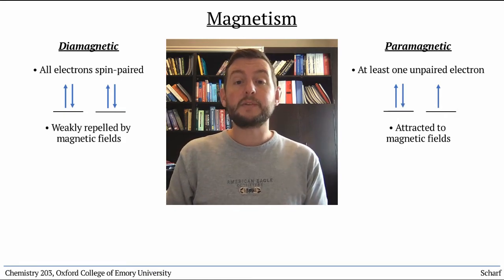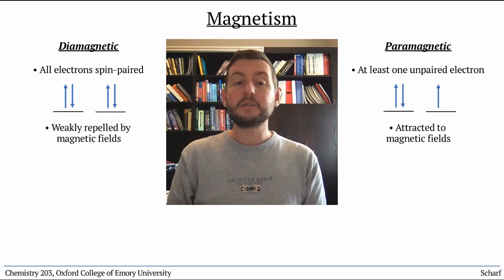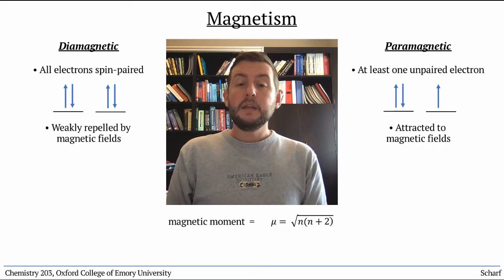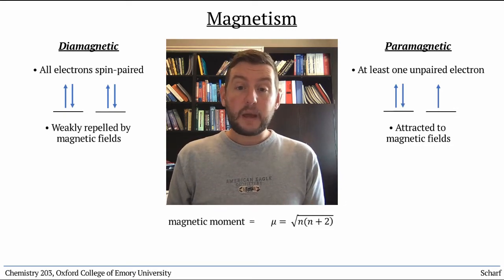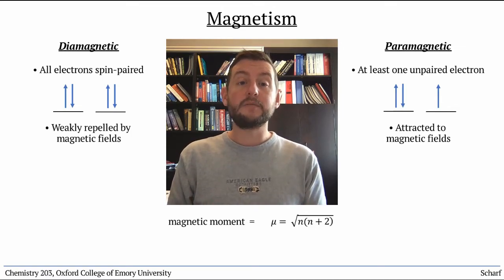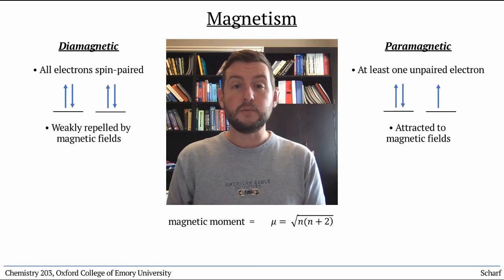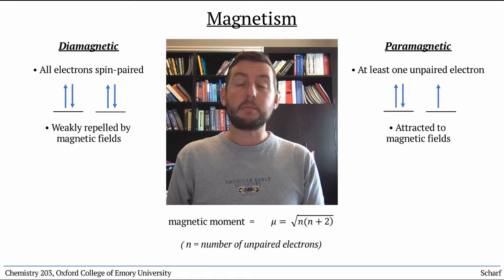We measure a compound's magnetic properties by measuring something called the magnetic moment, mu. This gives us an experimental way to determine the number of unpaired electrons in a compound using the formula mu equals the square root of the quantity n times n plus 2, where n is the number of unpaired electrons.